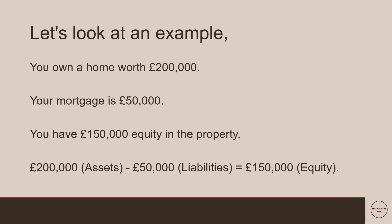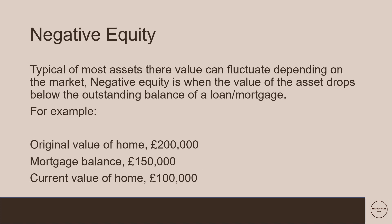So let's look at a working example. You own a home with a value of £200,000. Your mortgage is £50,000 and your loan from the bank is £50,000. Using the equity equation — assets take away liabilities — we have the £200,000 home as our asset, and the £50,000 mortgage as our liability. Take that away and we have £150,000 equity in our house. It's a simple equation.